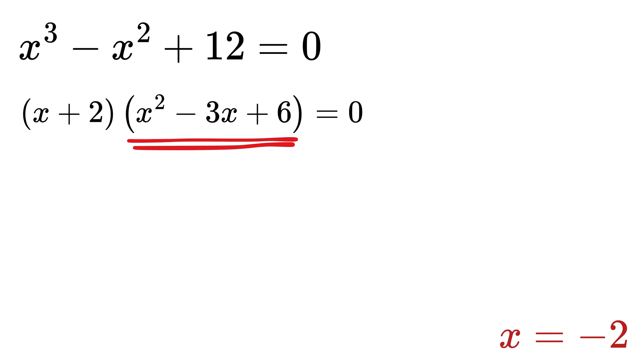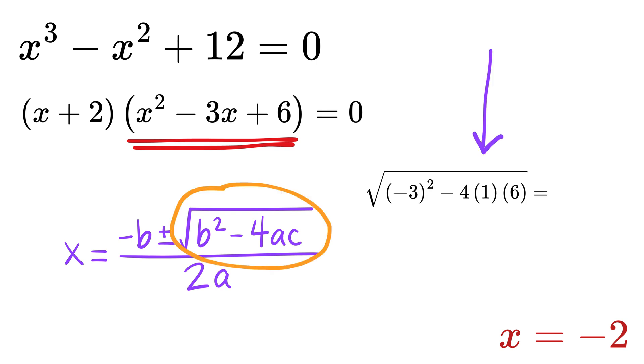And for this quadratic part, I will not bore you by solving the quadratic equation. We can simply use this quadratic formula. But just let me show you one thing: the part under the square root, or b squared minus 4ac, is negative, which means the roots are not real, or we can say complex in nature.